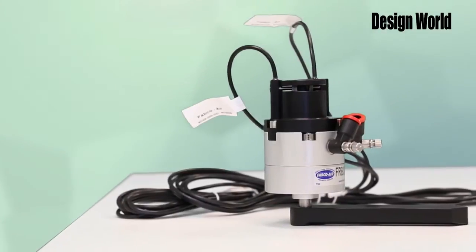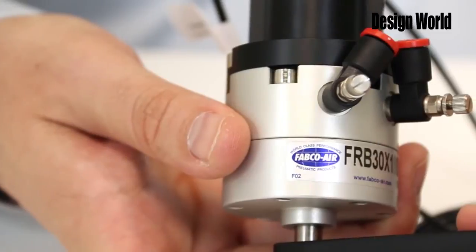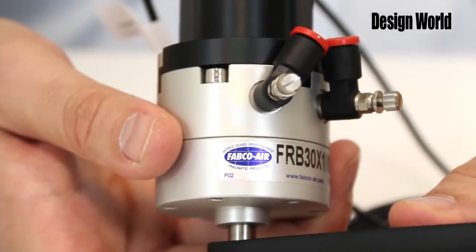Now the FRB Series is a vane style rotary actuator and this product was designed to offer actuator rotation in the tightest of spaces. This is an ultra-compact pancake design and it is available in four different models: